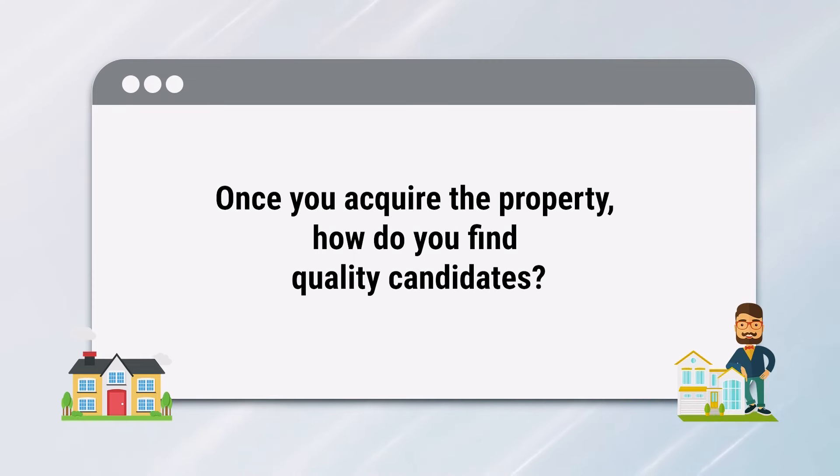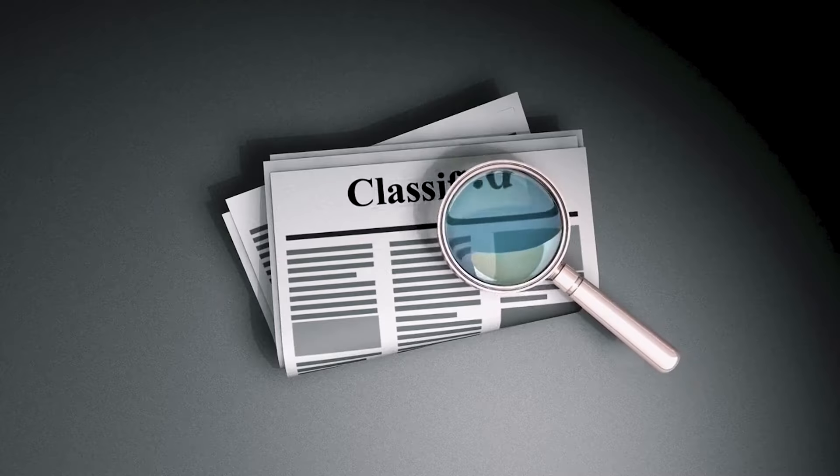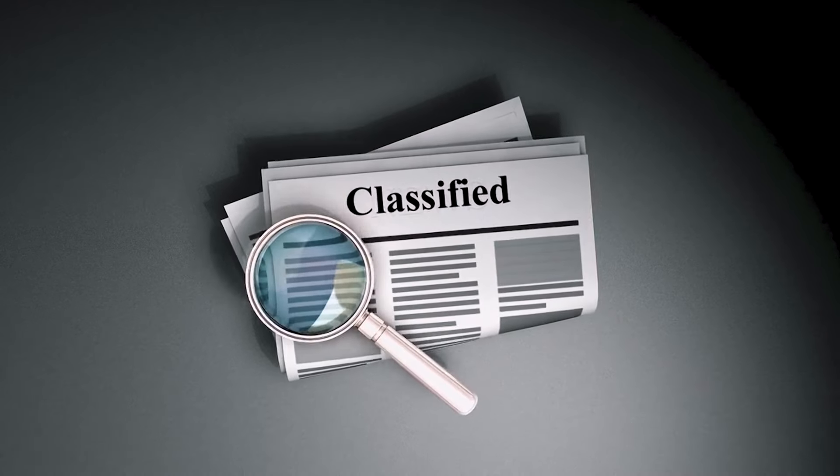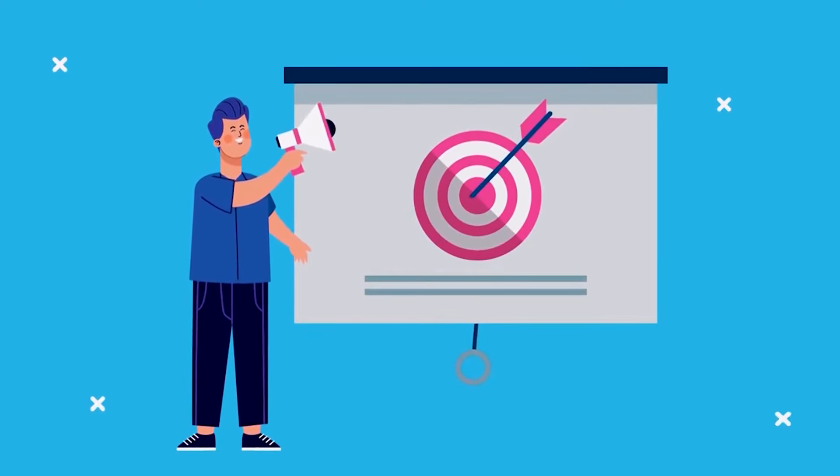Once you acquire the property, how do you find quality candidates? There are a number of ways to find quality tenants — you can use traditional methods such as advertising in newspapers or online, use a property management company, or screen potential tenants yourself by doing a credit check and a rental history check. It's of the utmost importance that you do your research first, as you want to find tenants who will pay rent on time and take care of your property.